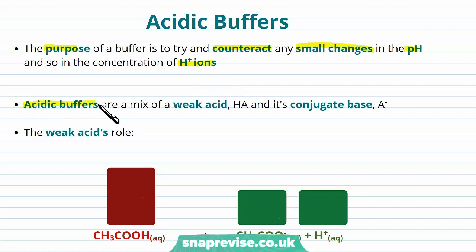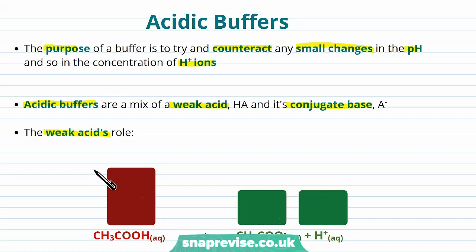Acidic buffers are a mix of a weak acid and its conjugate base. The symbol for weak acid is HA, and when we've dissociated the hydrogen, the symbol for the conjugate base is A-. The role of the weak acid is to set up this equilibrium. For our example we're going to consider ethanoic acid — there's quite a lot of it, which is then dissociating into CH3COO-, the ethanoate ion, and H+ ions. There's more of the acid because it's weak, so the position of the equilibrium is well over to the left.